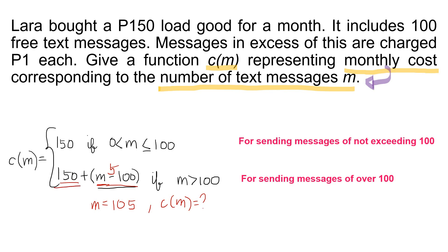The second formula for c of m can also be simplified to 50 plus m. Let's verify: 50 plus 105 is 155 — the same answer. This situation involves a piecewise function since it requires more than one formula. Hope you have learned how to represent real-life situations using functions.